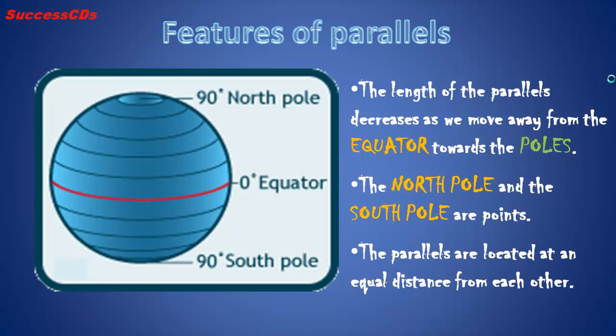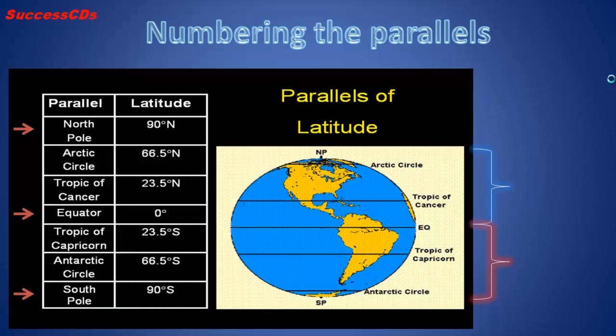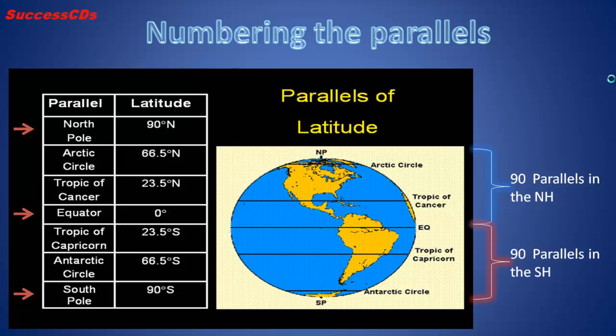The parallels are located at an equal distance from each other. Children, there are 181 parallels in total: 90 in the Northern Hemisphere and are marked with a capital N, and 90 in the Southern Hemisphere which is marked with a capital S. The North Pole is written as 90 degrees north, the South Pole is written as 90 degrees south, and equator as only 0 degrees.